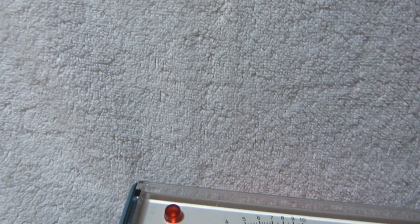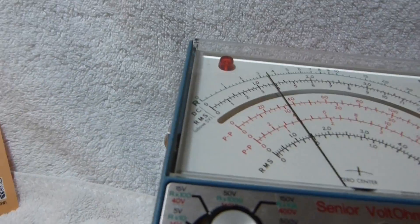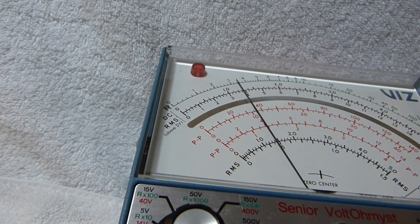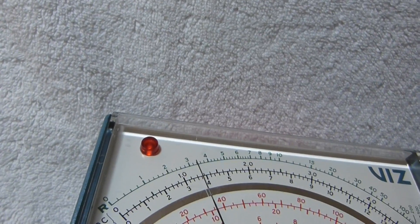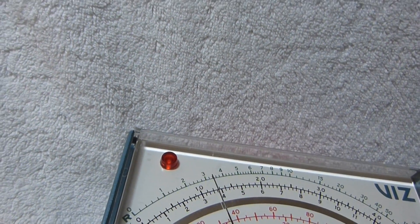And there's only one scale for resistance, thankfully. You just have to multiply it by the right factor. So this is a 330 or whatever ohm resistor.